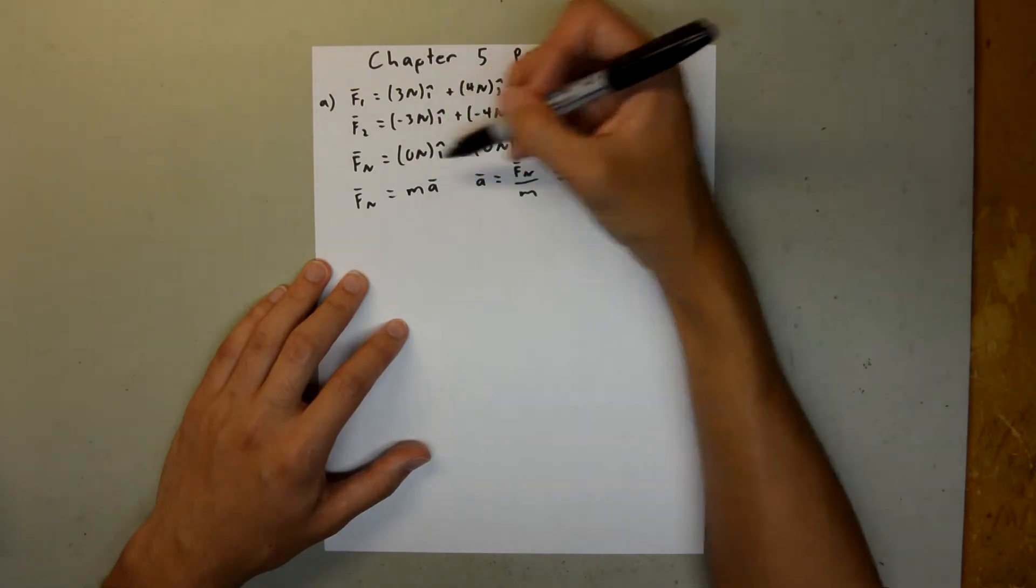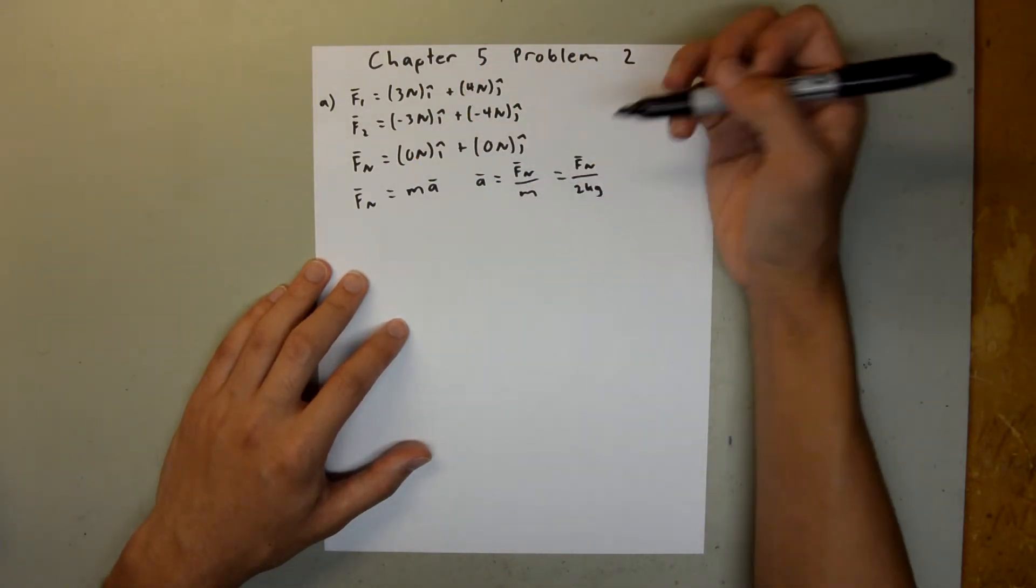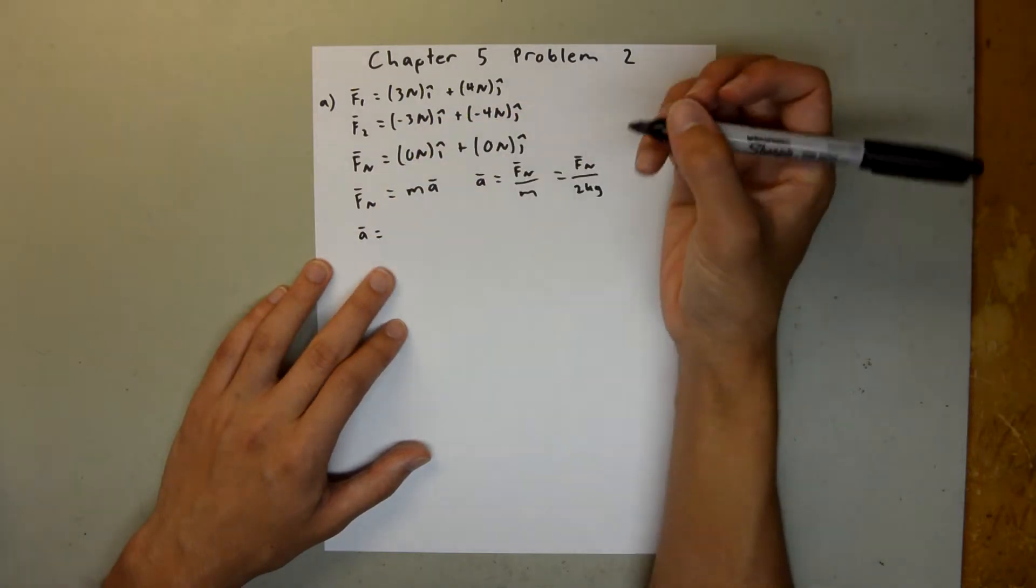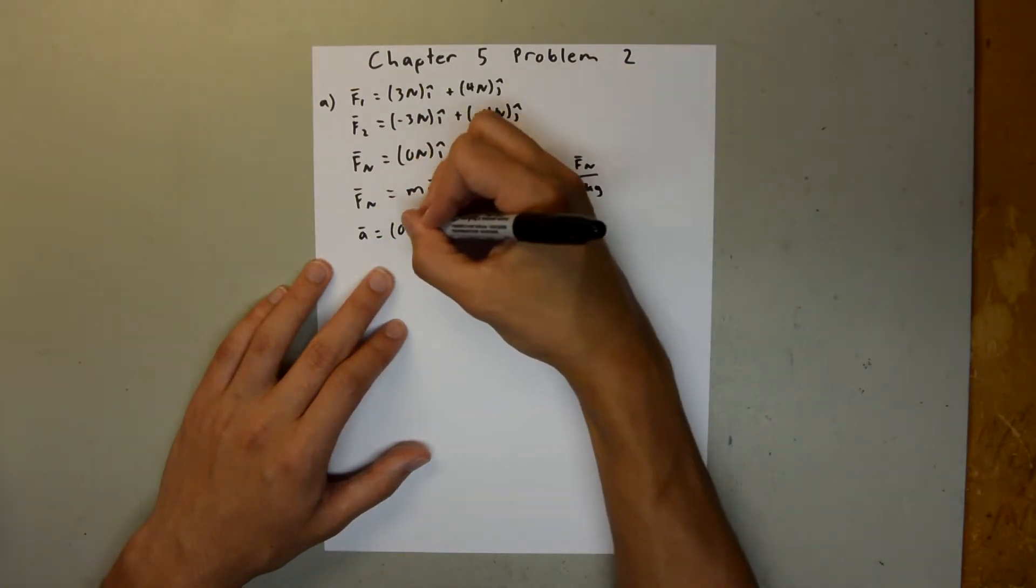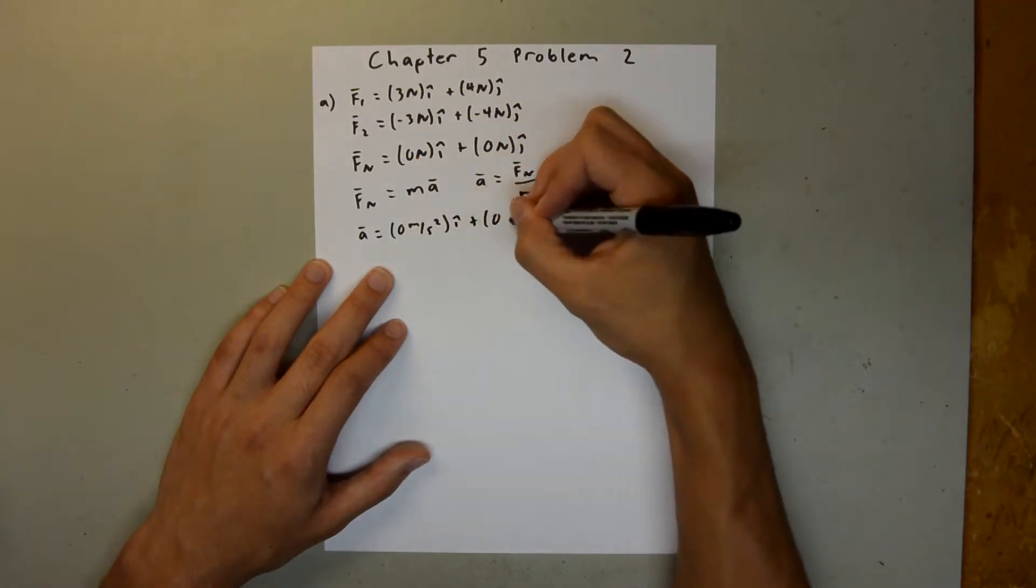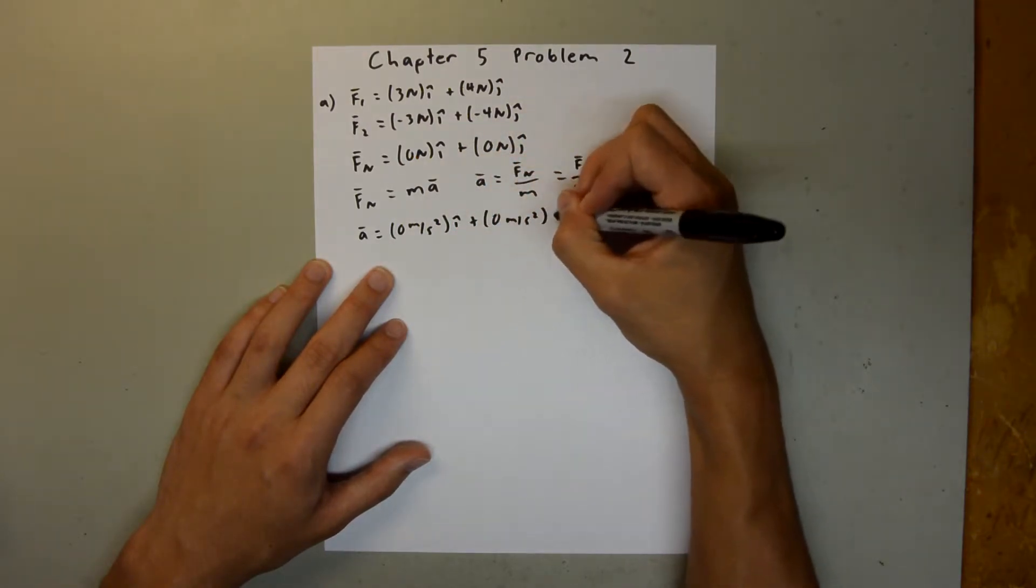So here we have 0 divided by 2 is 0, and 0 divided by 2 is 0. So, our acceleration is going to be equal to 0 meters per second squared i-hat plus 0 meters per second squared j-hat.